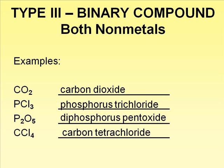Notice the use of a prefix with the first element in this example. Also notice that we drop the -a in penta since oxygen starts with a vowel. The last example is named carbon tetrachloride. Please remember to limit the use of prefixes to binary compounds containing all non-metals, which again is rare.